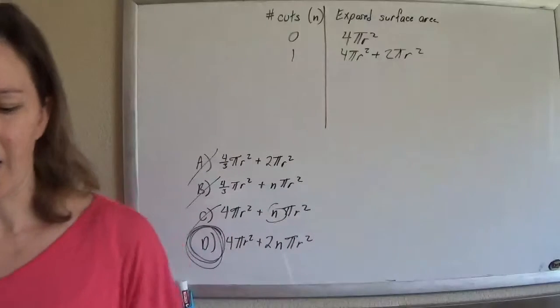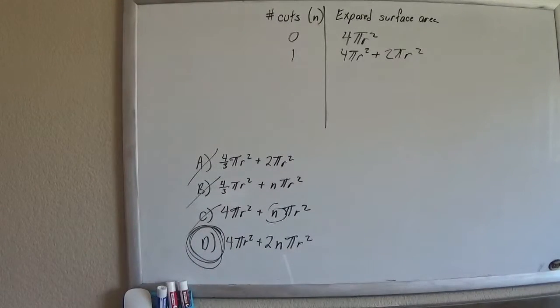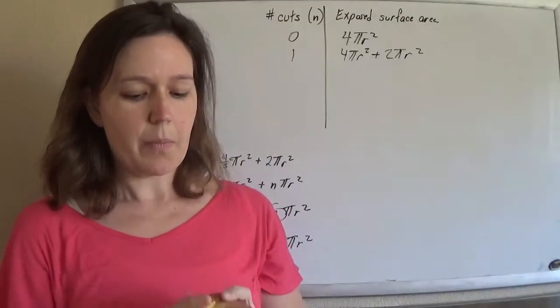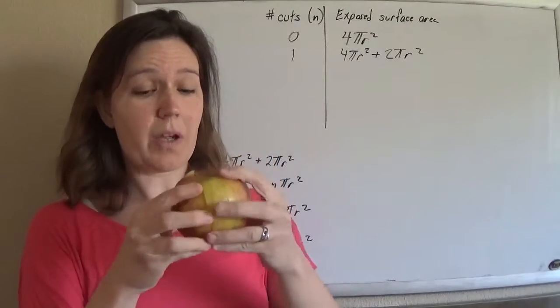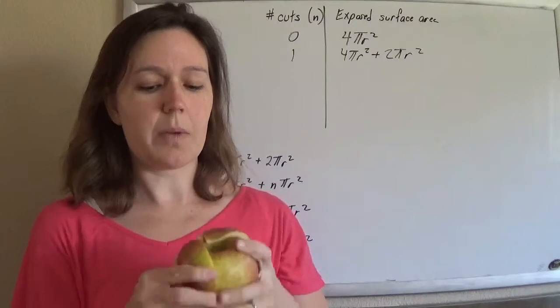So I'm going to attempt, I got an apple just in case. It would work better with an orange because you could actually cut through the center. The apple was hard to cut through the center. But, you don't cut it at all, 4πr². You cut it once. Oh no, it's falling apart on me. Cut it once.